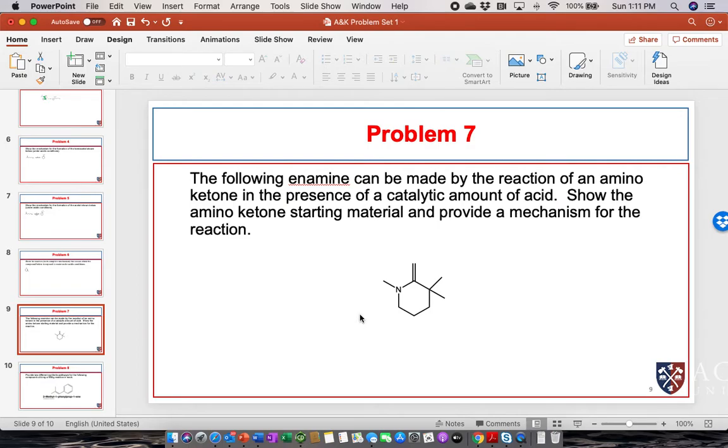Problem 7 on my computer here. The following enamine can be made by the reaction of an amino ketone in the presence of a catalytic amount of acid. Show the amino ketone starting material and provide a mechanism for the reaction.